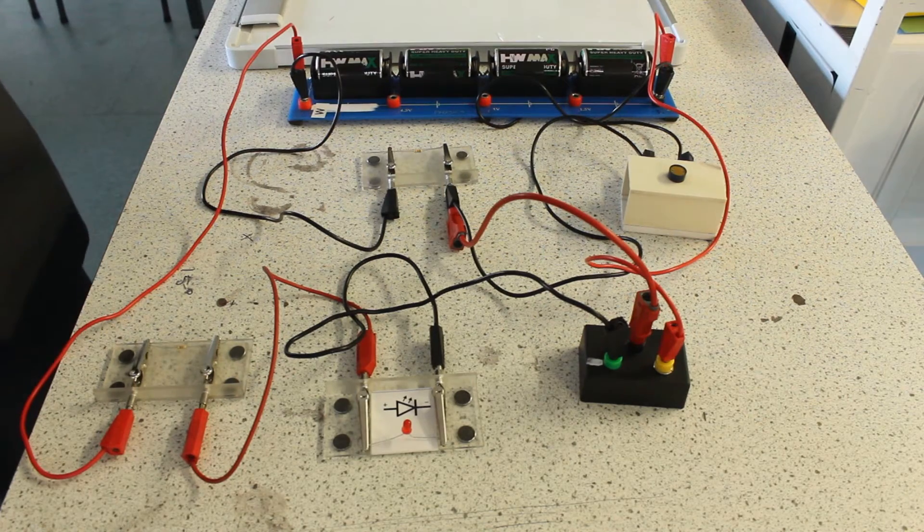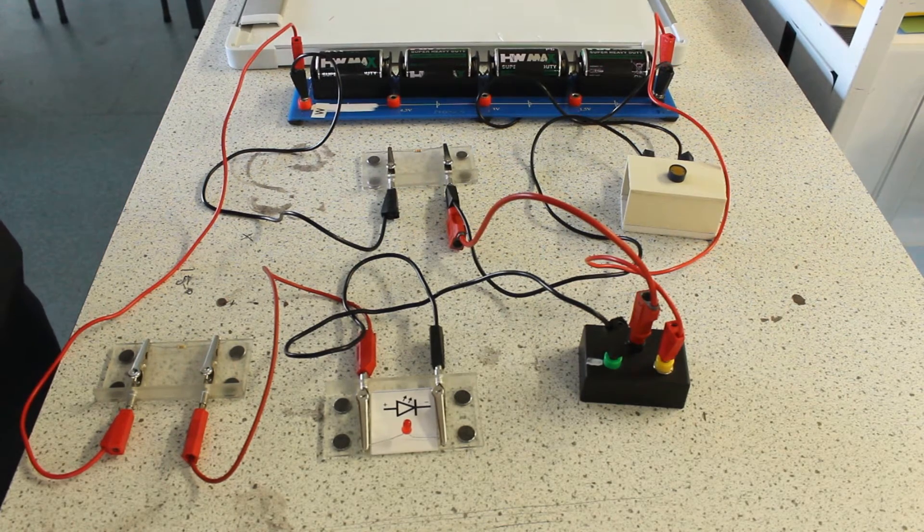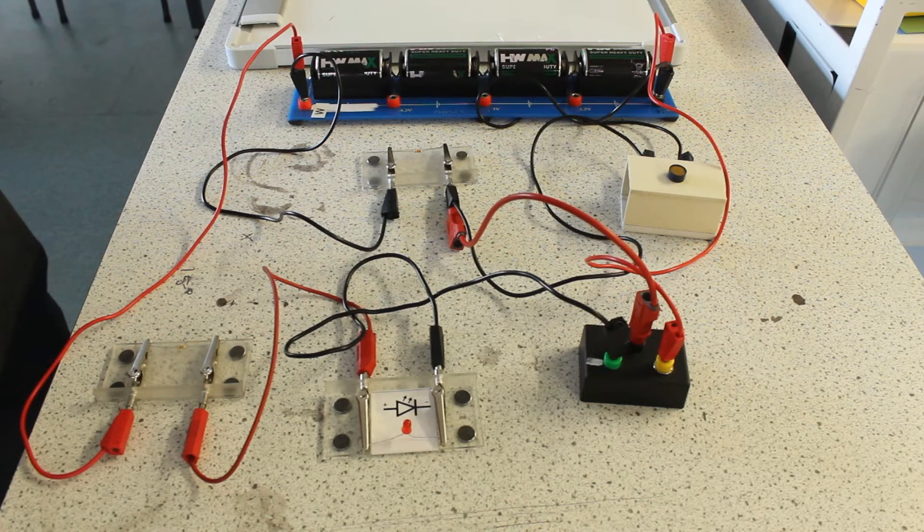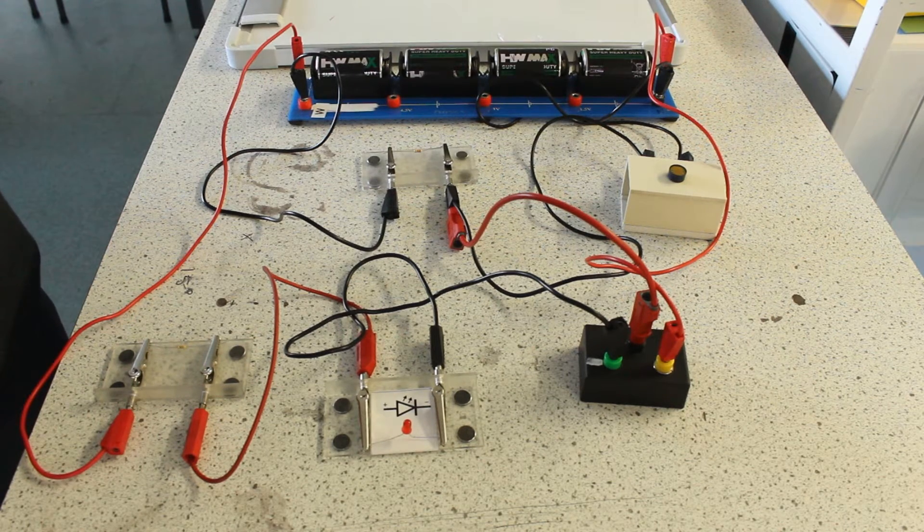Hello, today we're going to be talking about MOSFETs and light-dependent resistors and how they can be used to turn on or turn off an LED when the conditions change.